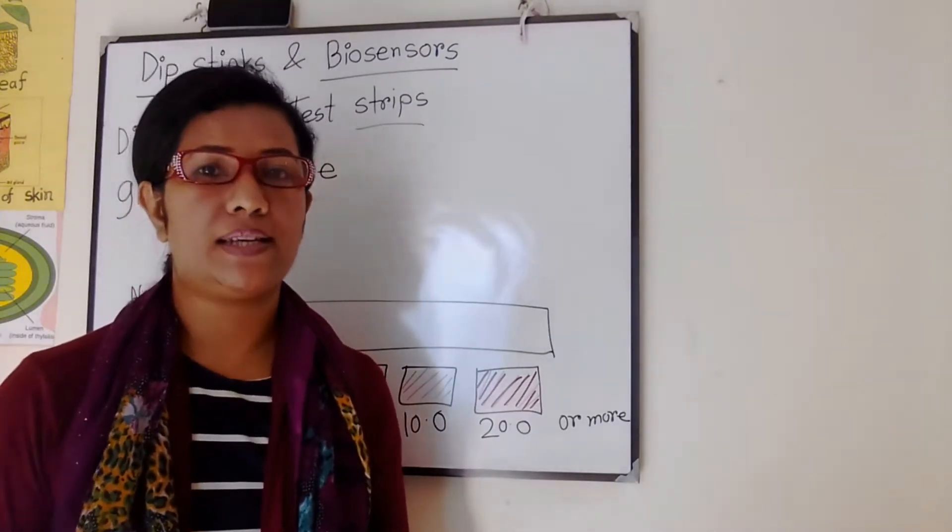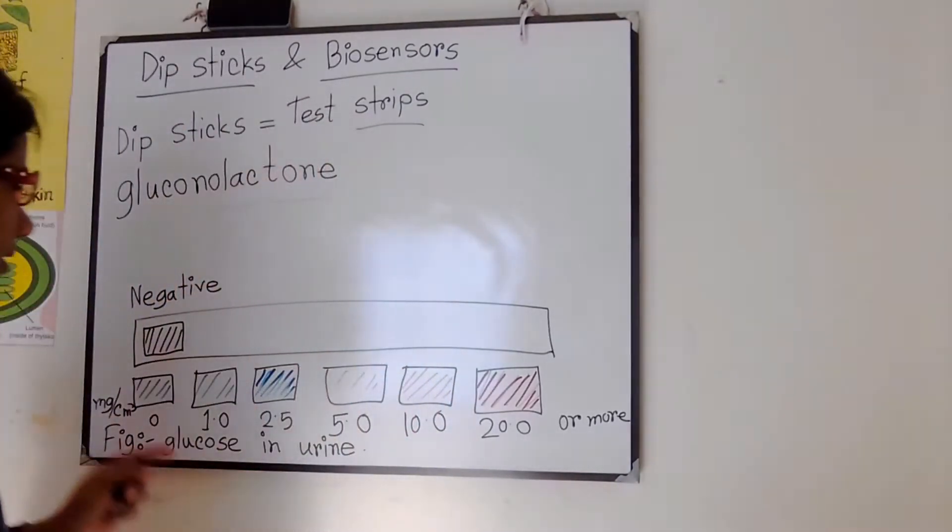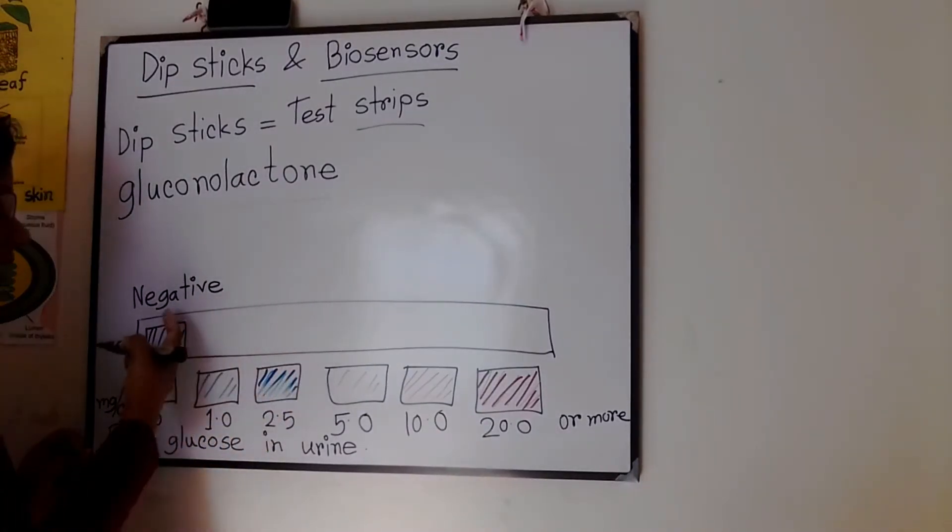The more glucose that is present, the darker the color. So you can see here at this diagram, this is negative.